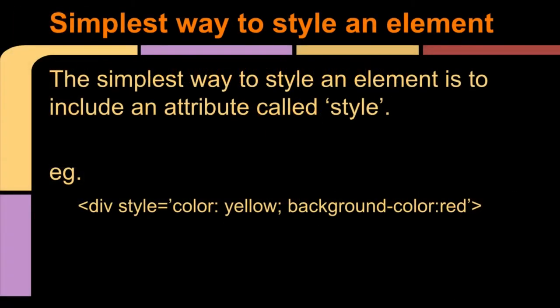We see here the simplest way to add a style to an element, and it's just to add an attribute called style. In this style, we're adding a color of yellow and a background color of red. You'll note that all spellings are the American version, which is C-O-L-O-R, rather than C-O-L-O-U-R, which is the British spelling.